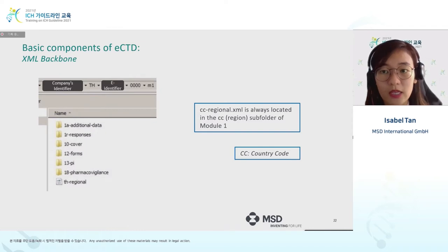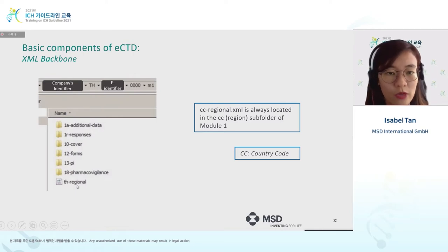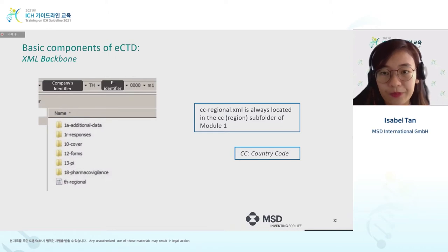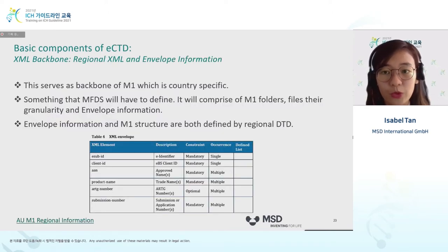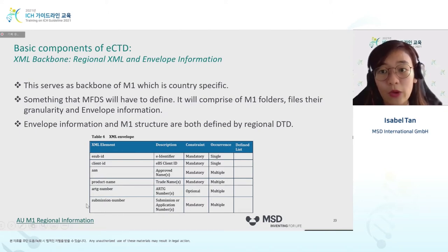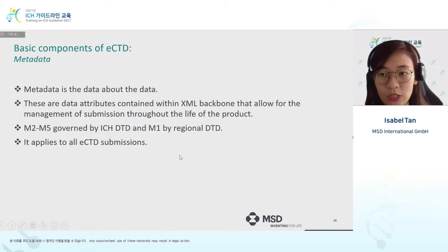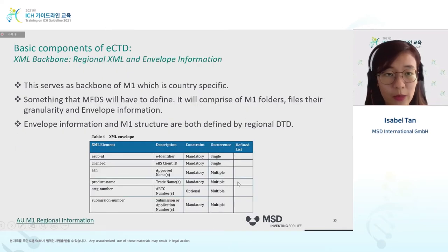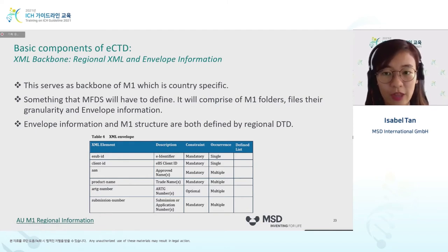Underneath the module 1 folder we find the regional XML. For Korean eCTD dossiers, we should expect a KR-regional XML. The regional XML displays the backbone of module 1 — it must be defined by MFDS — and it bears individual module 1 documents, envelope information, and module 1 granularity. The Australian TGA guidance on envelope information is shown as an example of what will eventually need to be defined by MFDS.